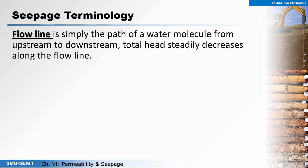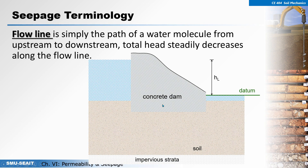A flow line is simply the path of a water molecule from upstream to downstream; total head steadily decreases along the flow line. From this figure, this is the upstream side and this is the downstream side. Water will flow from the upstream side towards the downstream side, but since this concrete dam is considered impervious — meaning water cannot pass through it — water molecules will pass under the dam.